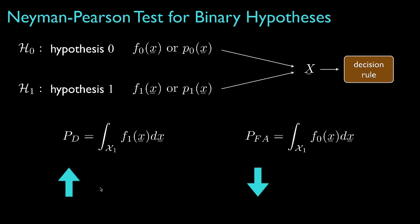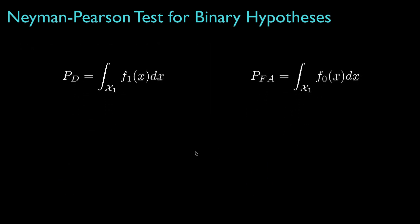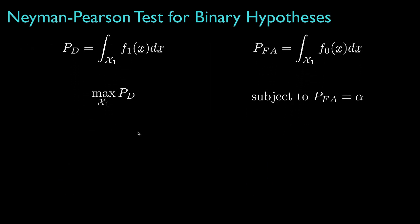We could make the detection probability 1 by setting the detection region to the entire observation space. That would, however, also make the false alarm probability 1. Instead, we'd like to make the detection probability as large as possible while holding the false alarm probability to some fixed value. Specifically, we'd like to pick a classification region that maximizes the detection probability subject to the constraint that the false alarm probability is some fixed value, say alpha.